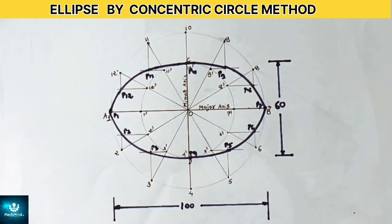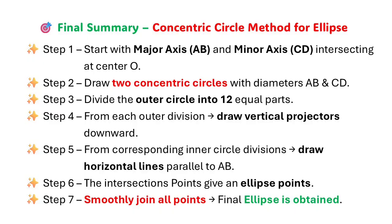Let's summarize the whole method. In first step, we started with the major axis AB and minor axis CD intersecting at point O. Then in next step, we drew two concentric circles with diameter AB and CD. In next step, we divided the outer circle into 12 equal parts. In step 4, we drew vertical projectors downward from each outer division. In the next step, we drew horizontal lines parallel to AB from the corresponding inner circle divisions. Where these intersection points meet, we marked these points. We joined all these points by a French curve to obtain an ellipse.